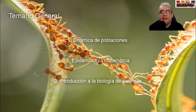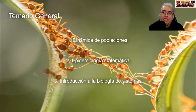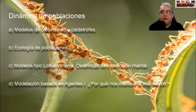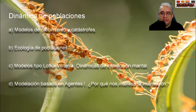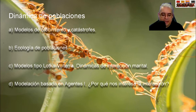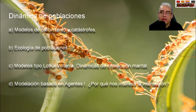El temario general tiene tres partes. La primera es dinámica de poblaciones, donde nos meteremos un poco hacia ecología. Vamos a estudiar modelos de crecimiento, partiendo del más sencillo, que es el de Malthus, e iremos complicando la vida. Veremos modelos de crecimiento que tienen cambios abruptos para cierto juego de parámetros, y daremos una pequeña introducción histórico-teórica hacia la teoría de catástrofe: su uso y su abuso en la modelación matemática.